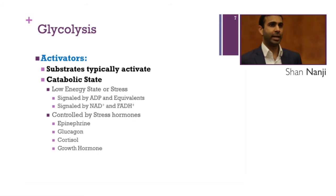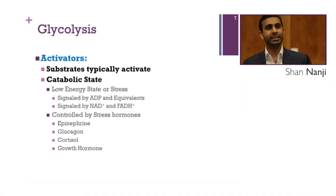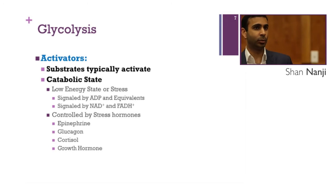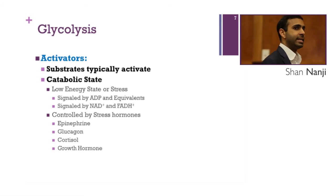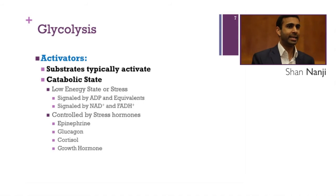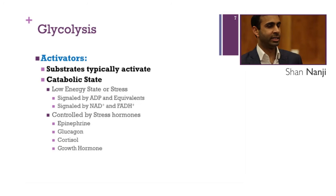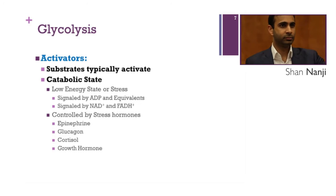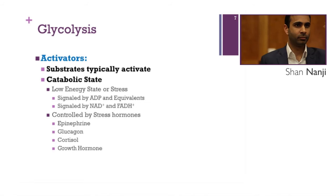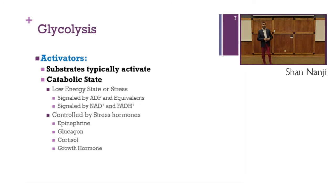In the catabolic state, activators include signals of a low energy state or stress. These are signaled by ADP and equivalents, as well as NAD and FADH — indicating the cell needs to produce more energy.